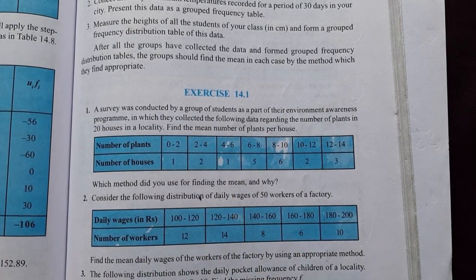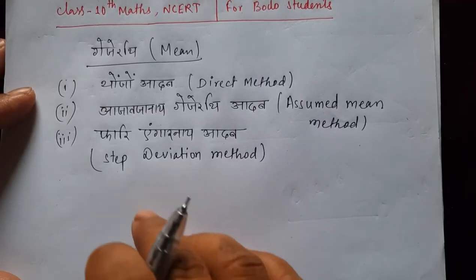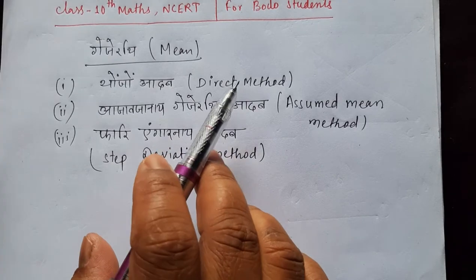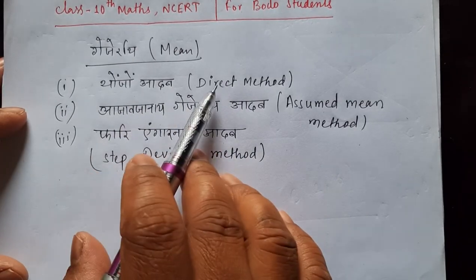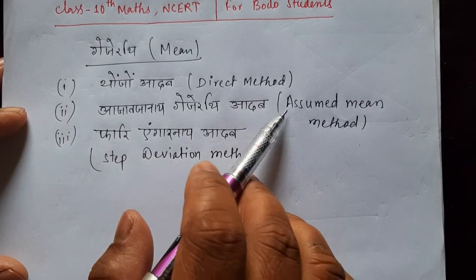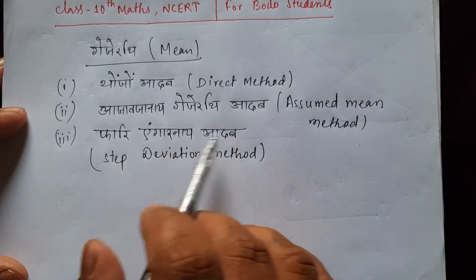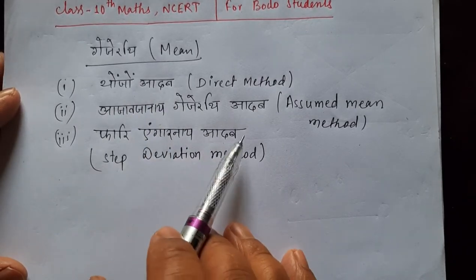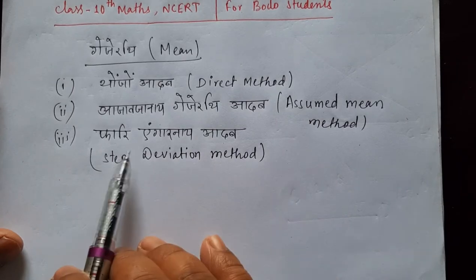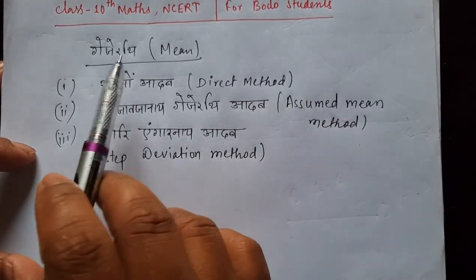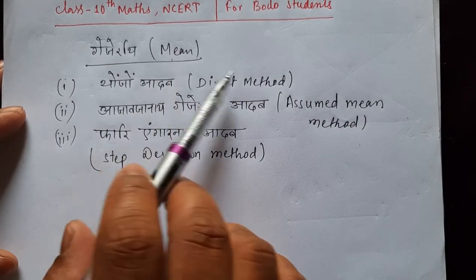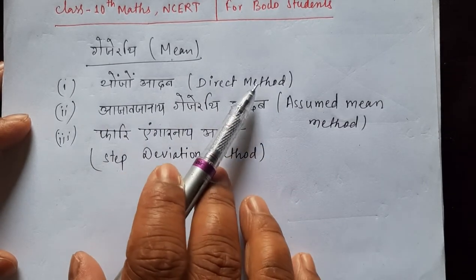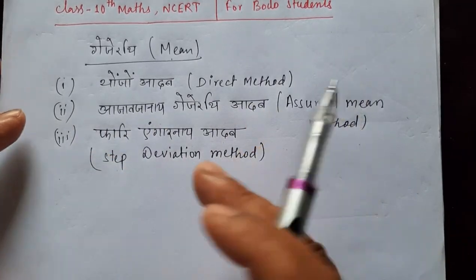The second method is also correct. The third method is also an option. We can use the mean by using three methods. Using the direct method, we can find the mean. The direct method is very suitable here.